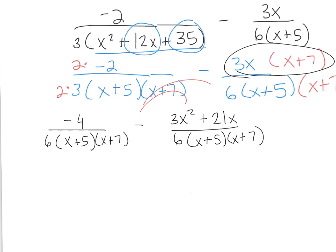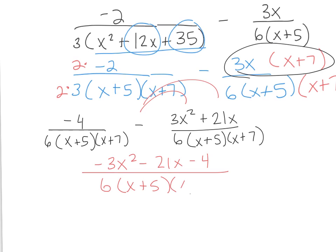If I look at my numerator, the negative is going to apply to each one of these terms, so I'm going to write it as negative 3x squared minus 21x minus 4 over 6 times x plus 5 times x plus 7. There are no factors of 12 that add up to negative 21, and there's no greatest common factor, so this is my final answer.